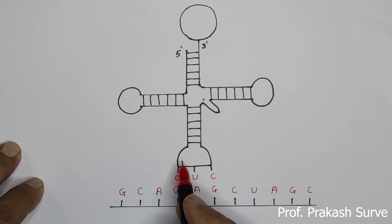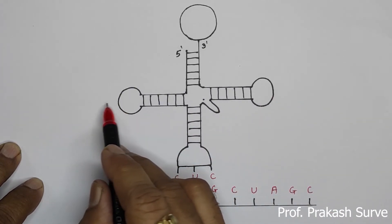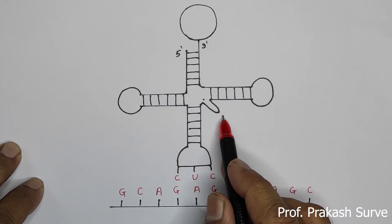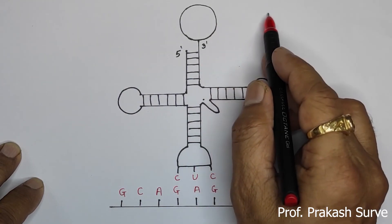So here we got the anti-codon loop. This one you got the T-loop. And this one you got the D-loop. This one is a variable loop. This is a 5' end. This is a 3' end. This is a glutamic acid.